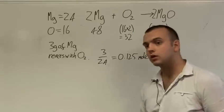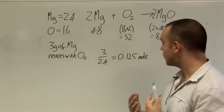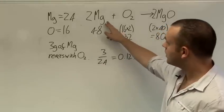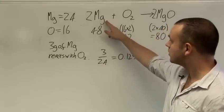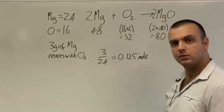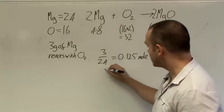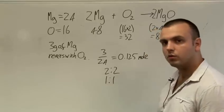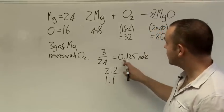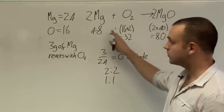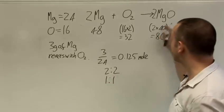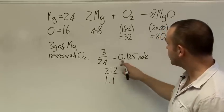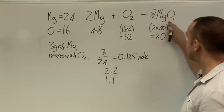So we know that we have an eighth or 0.125 moles of magnesium reacting. We can see from the equation that 2 moles of magnesium would give us 2 moles of magnesium oxide. In other words it's a 2 to 2 ratio or more simply a 1 to 1 ratio. That means if we have 0.125 moles of magnesium reacting, we're going to have 0.125 moles of magnesium oxide at the end.